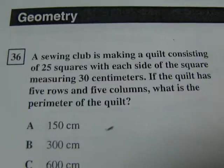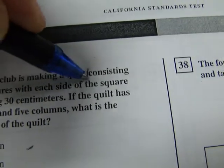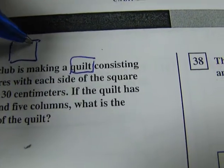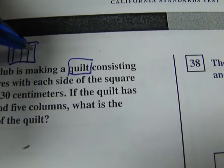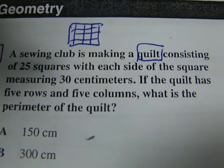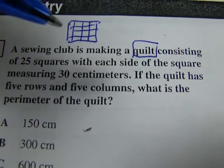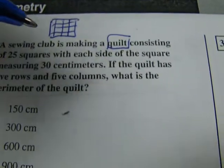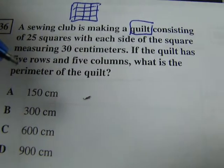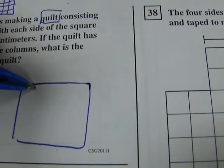This one's caused a few people some headaches. Sewing Club is making a quilt. A quilt is like a blanket that's made of small little patches. So this one is made of 25 squares on each side, with each side of the square measuring 30 centimeters. If the quilt has five rows and five columns, what is the perimeter of the quilt?